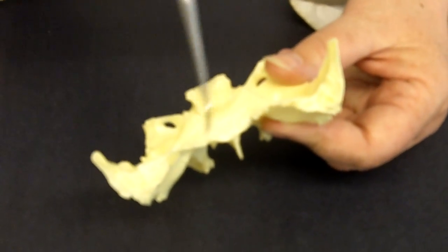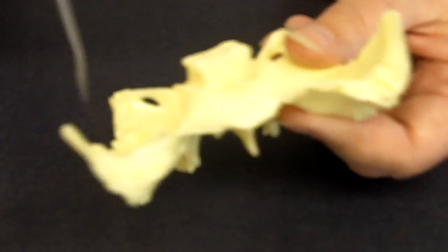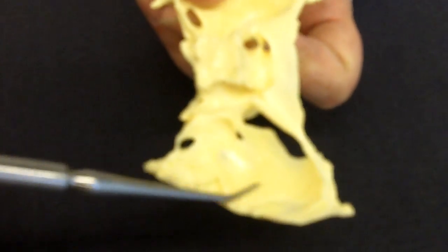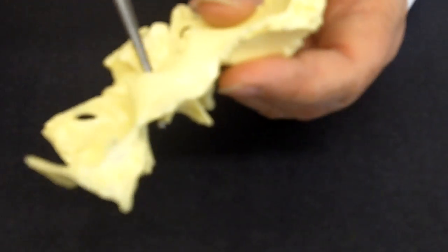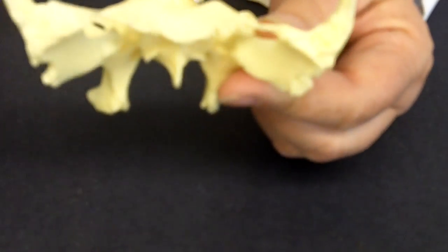Some of the obvious features are the lesser wings and the greater wings. Coming through here is the optic canal, which is for the optic nerve.